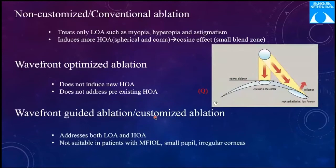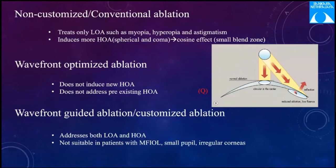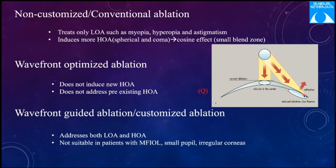Ablation profiles for excimer laser include: non-customized (conventional) ablation, which treats only lower-order aberrations (myopia, hyperopia, astigmatism) but induces more higher-order aberrations such as spherical and coma aberration due to the cosine effect — peripheral rays have an oval shape and energy is distributed over a larger area, resulting in less ablation peripherally. Wavefront-optimized ablation increases the number of pulses delivered to the peripheral cornea so no new higher-order aberrations are induced, though it does not address pre-existing higher-order aberrations. It is also faster than wavefront-guided ablation.